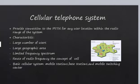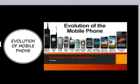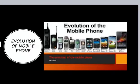The cellular telephone system provides connection to the PSTN for any user location within the radio range of the system. Its characteristics are: large number of users, large geographical area, and limited frequency spectrum. Communication between the base station and mobile is defined by the standard air interface: forward voice channel, reverse voice channel, forward control channel, and reverse control channel.